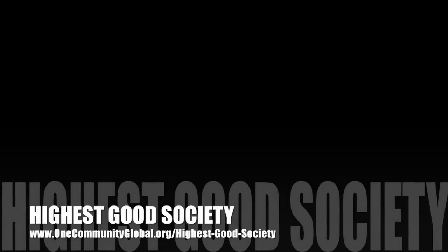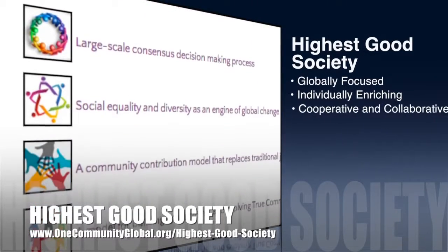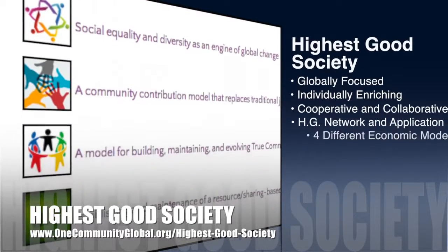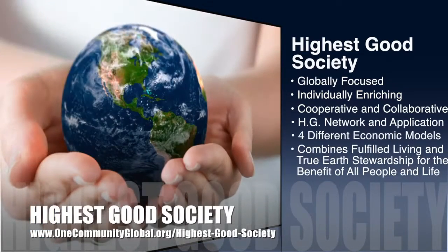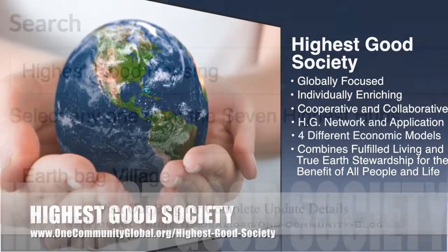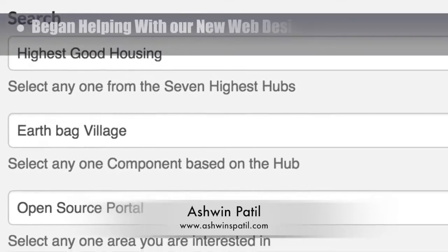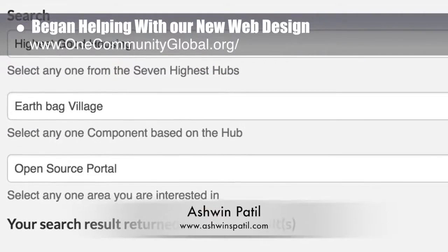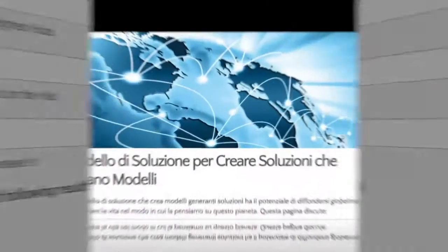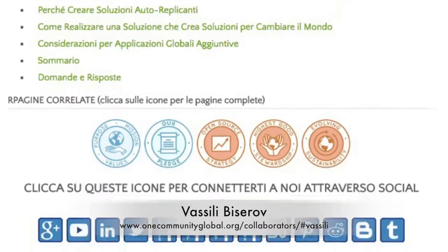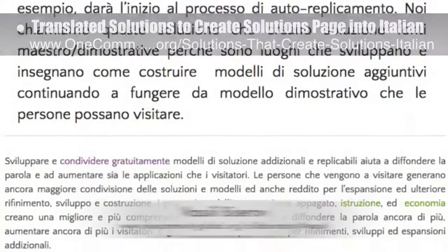One Community's approach to highest good society is globally focused, individually enriching, cooperative and collaborative, includes a highest good network and application, four different economic models, and combines fulfilled living and true earth stewardship for the benefit of all people and all life on this planet. Ashwin Patil, web developer, joined the team beginning a filter design for more easily finding information on the new site. Vasily Bizarov, writer, poet and professional translator, helped translate our solution model page into Italian.